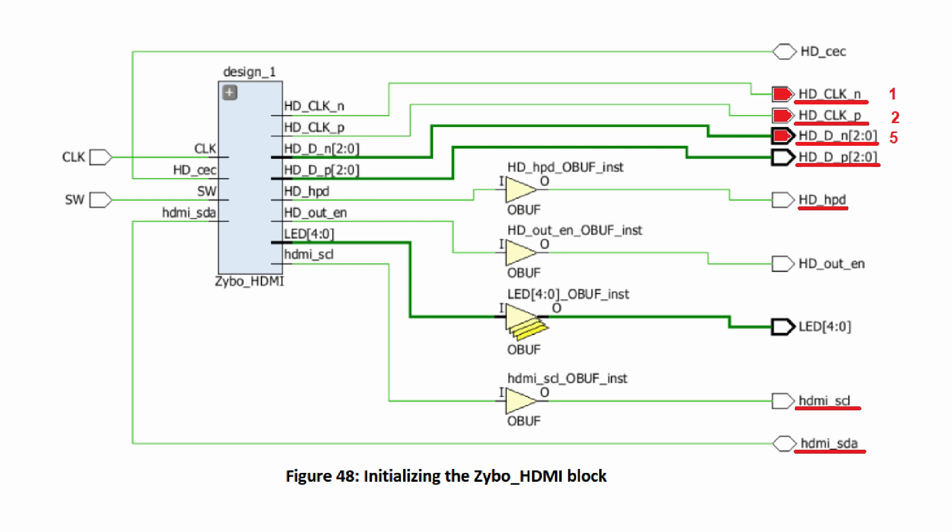The pin CEC is for communicating with other devices and is not of interest here. The pin HD out enable is a special pin for ZIPO because ZIPO has a bi-directional HDMI port — this pin controls which direction the port is used. For all boards that have separate HDMI input and output ports, this pin is not available. The LED is only for debugging purposes.